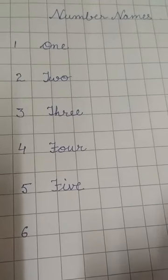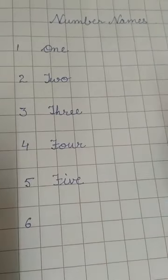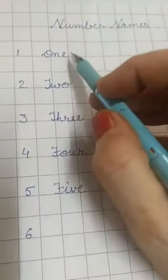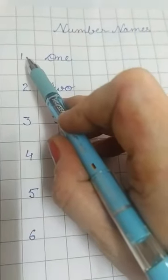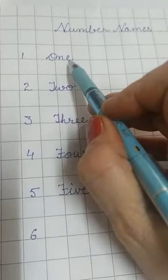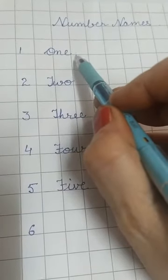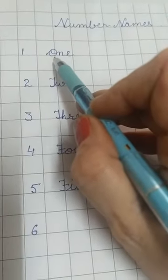Hello children, today we are going to do number names. See, I have written a few. First is 1. O-N-E, one. Here O gives the sound of V.